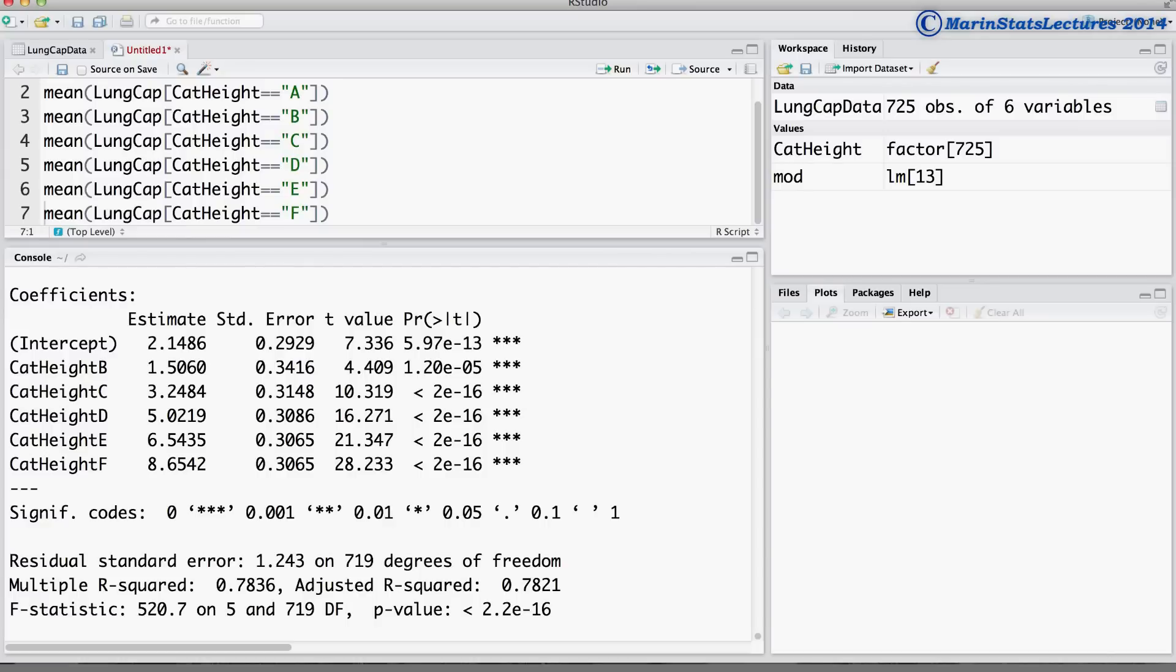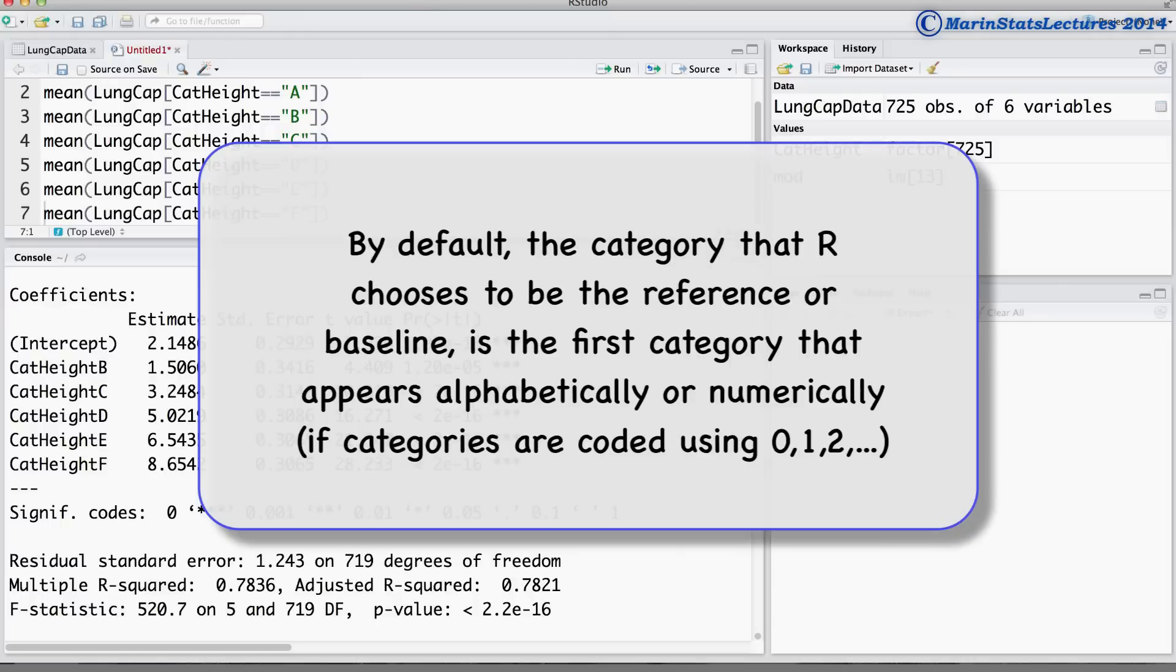When including a categorical variable into a regression model, R will create the dummy or indicator variables automatically. The category that R chooses as the reference or baseline category will be the category that comes first alphabetically, or numerically if categories are coded using 0, 1, 2, and so on.